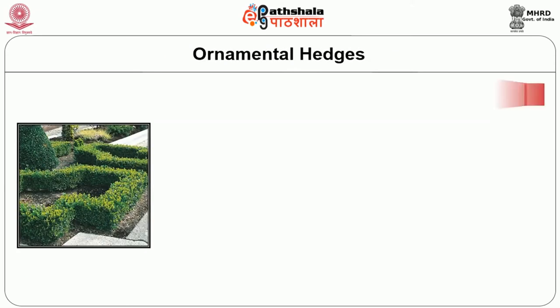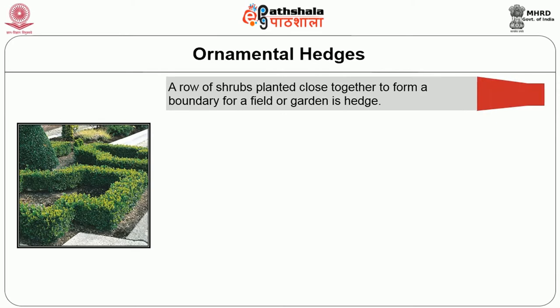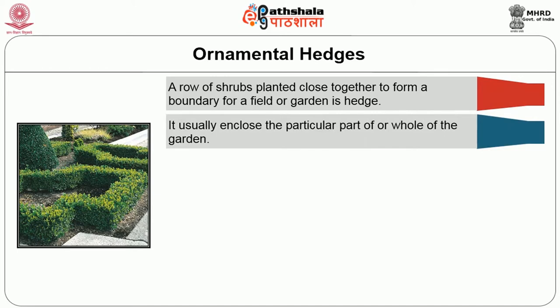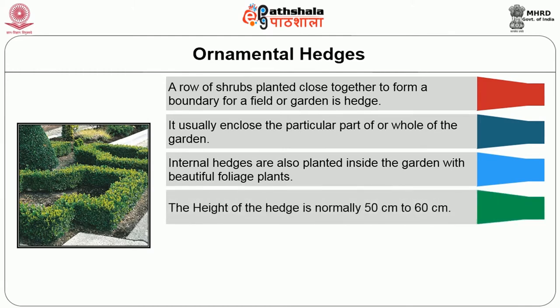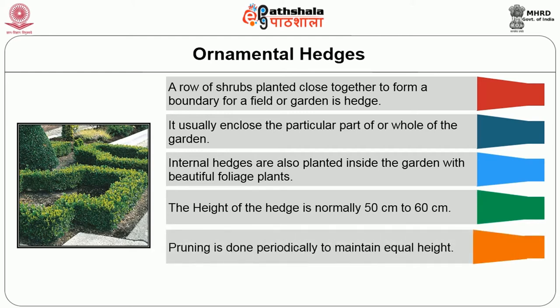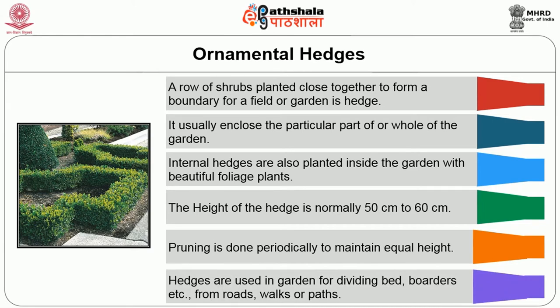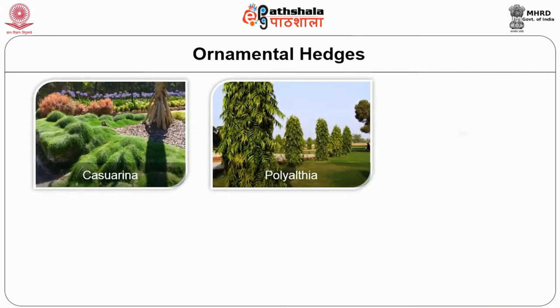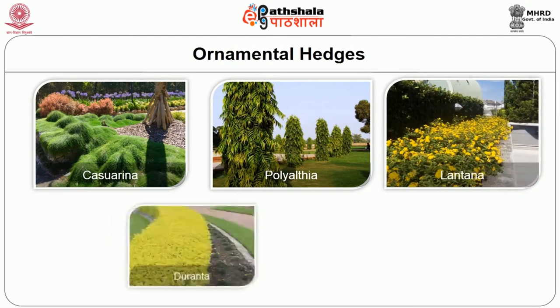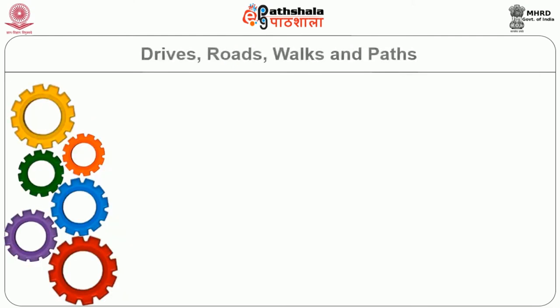We will see about ornamental hedges. A row of shrubs planted close together to form a boundary for a field or garden is a hedge. It usually encloses a particular part or the whole of the garden. Internal hedges are also planted inside the garden with beautiful foliage plants. The height of the hedges is normally 50 cm to 60 cm. Pruning is done periodically to maintain equal height. Hedges are used for dividing beds, borders etc. from roads, walks and paths. Plants suitable for hedges are Casuarina, Polyalthia, Lantana, Torrenia, Aralia.